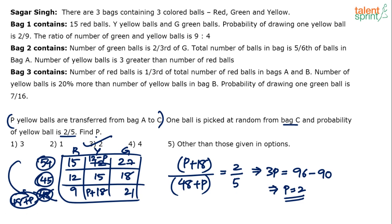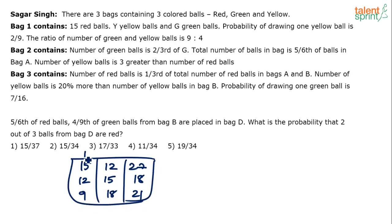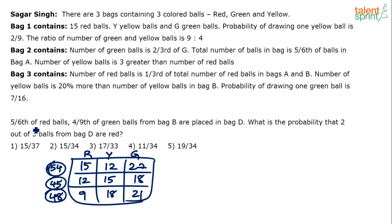Moving to question three. The data for this question: 5/6 of red balls and 4/9 of green balls from bag B are placed in a new bag D. Bag B has 12 red and 18 green balls. So bag D gets 5/6 of 12 = 10 red balls, and 4/9 of 18 = 8 green balls. Bag D has 10 red and 8 green balls, totaling 18 balls.